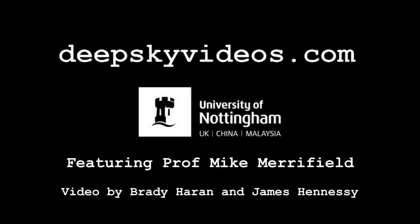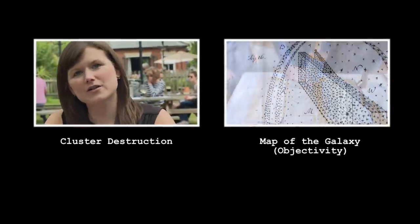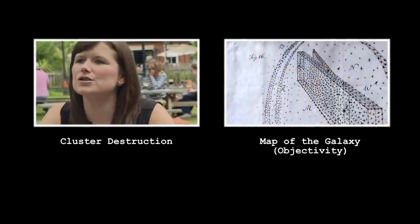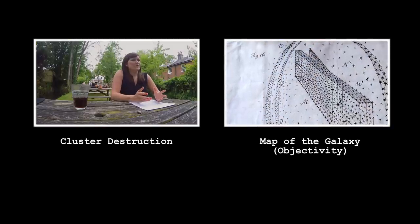Once they have formed, there are a couple of things that can happen. You get star-star interactions in a globular cluster — so you have flybys of stars.